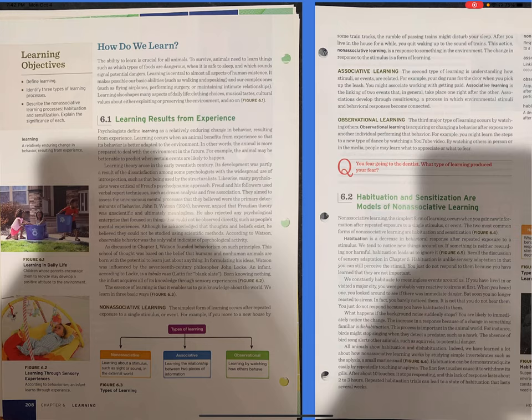Figure 6.1: Learning results from experience. Psychologists define learning as a relatively enduring change in behavior resulting from experience. Learning occurs when an animal benefits from experience so that its behavior is better adapted to the environment. In other words, the animal is more prepared to deal with the environment in the future. For example, the animal may be better able to predict when certain events are likely to happen.